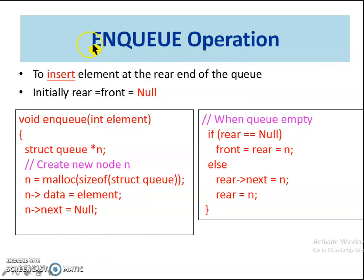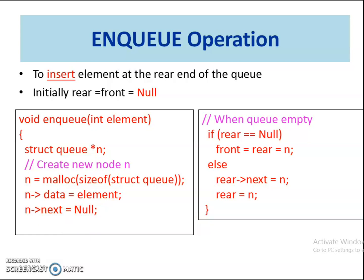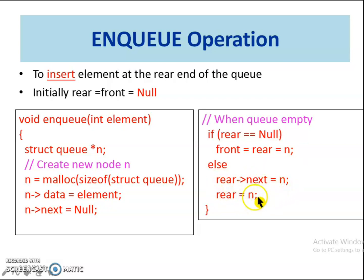Next, let us see the enqueue operation for linked queue. To insert an element, create a new node n, allocate memory, set the data with the element to be inserted, and set the next field as null. Once the new node is created, check whether the queue is empty. If so, the element is the first element, hence set front equal to rear equal to new node n. If the queue is not empty, set the next field of rear to point to n and set n as the new rear.